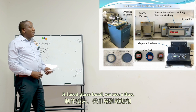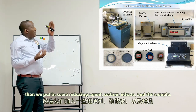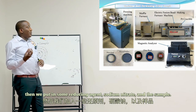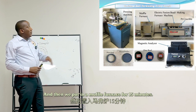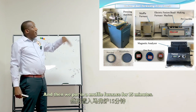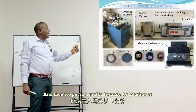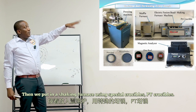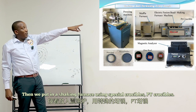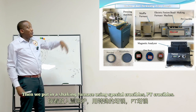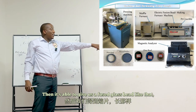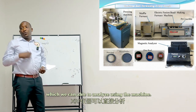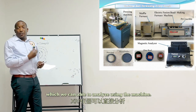For the fused glass bead method, we use a flux, then add a reducing agent — sodium nitrate — and the sample. We put it in a muffle furnace for 15 minutes, then into a shaking furnace using special platinum (PT) crucibles, and it produces a fused glass bead that we can analyze using the XRF machine.